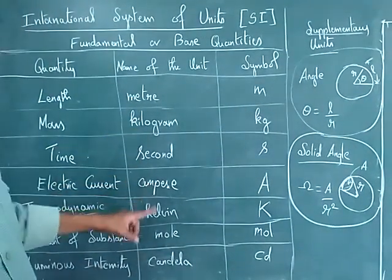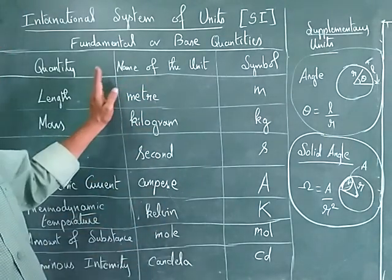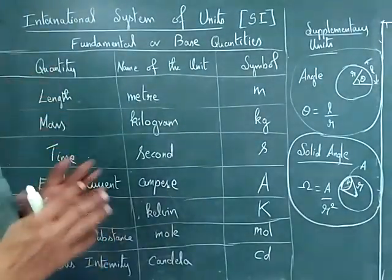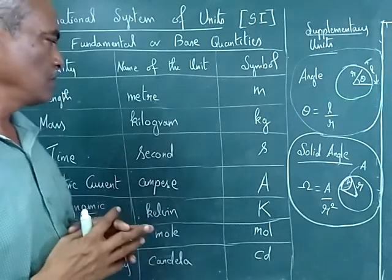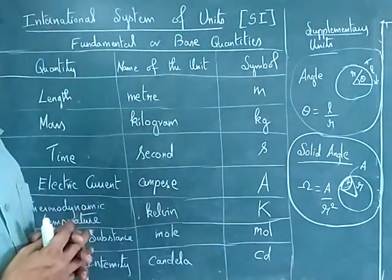So 1, 2, 3, 4, 5, 6, 7. These 7 are Fundamental or Base Quantities. One to one is totally different, not connected, basic quantity.